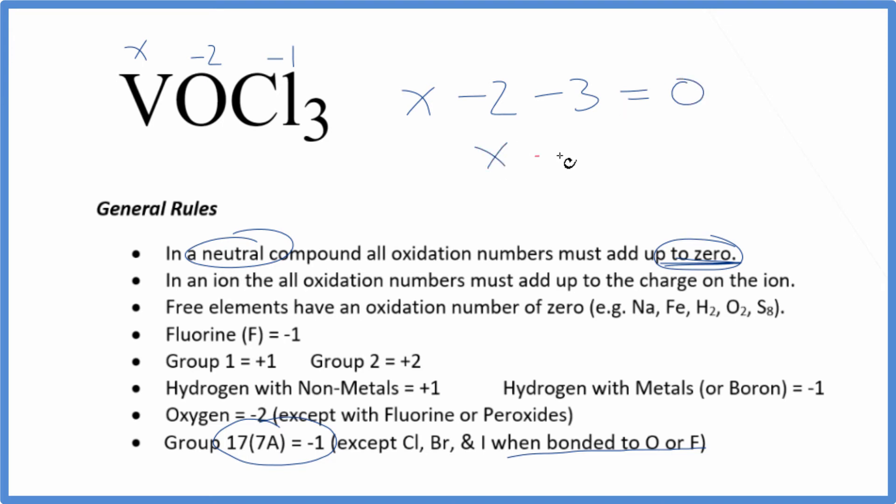So X minus 5, that equals 0. Add 5 to both sides. X equals a positive 5. So the oxidation number on the V in VOCl3, that's going to be a positive 5.